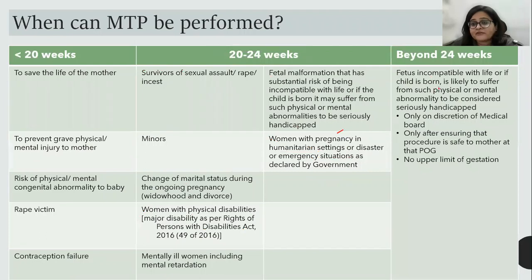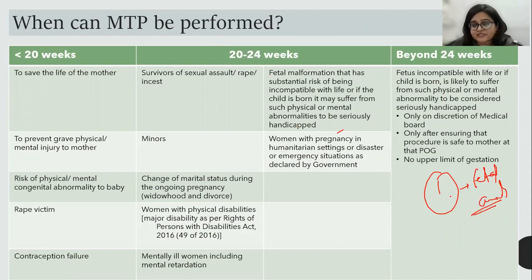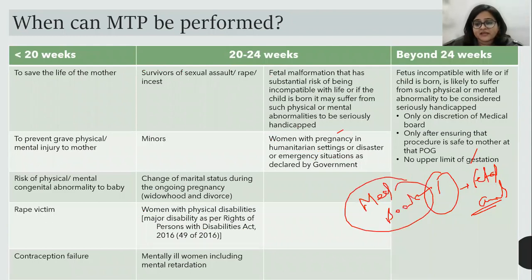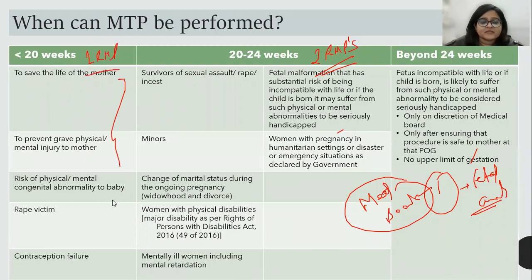Beyond 24 weeks, there is only one indication: fetal anomaly. For fetal anomaly there is no upper limit. Beyond 24 weeks, only the Medical Board can decide — no individual doctor can. Between 20 to 24 weeks, two RMPs are required to form an opinion. Less than 20 weeks, only one RMP is sufficient, and the indications remain the same as the previous act.